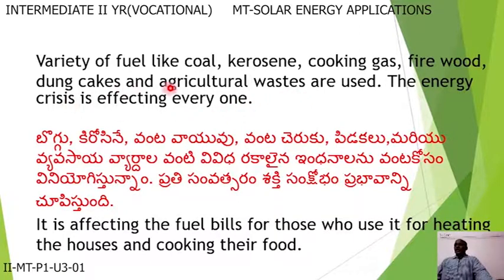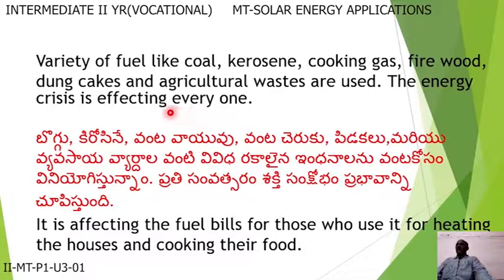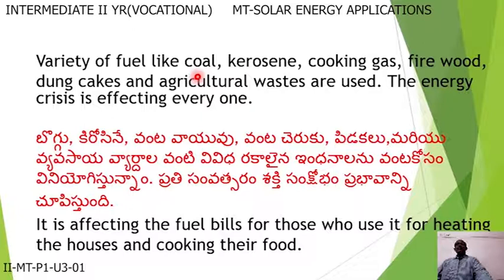This energy is consumed for cooking needs. Agricultural wastes are used and the energy crisis is affecting every year. For cooking needs, generally we are using a variety of fuels like coal, kerosene, cooking gas, firewood, dung cakes, and agricultural wastes.